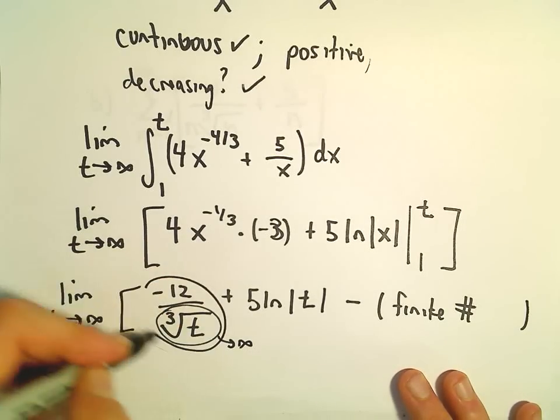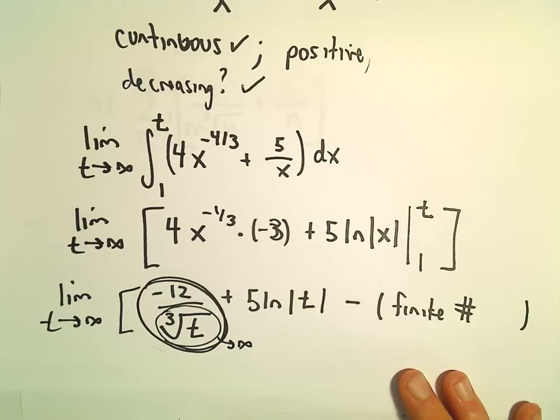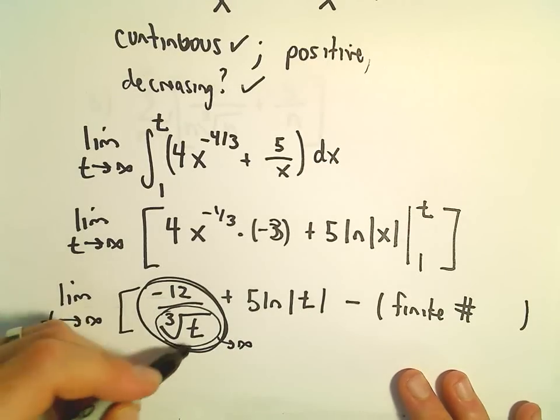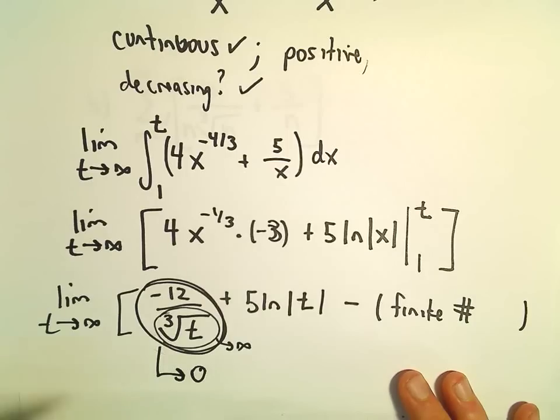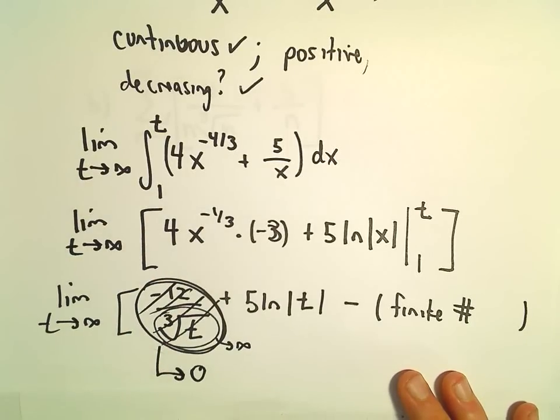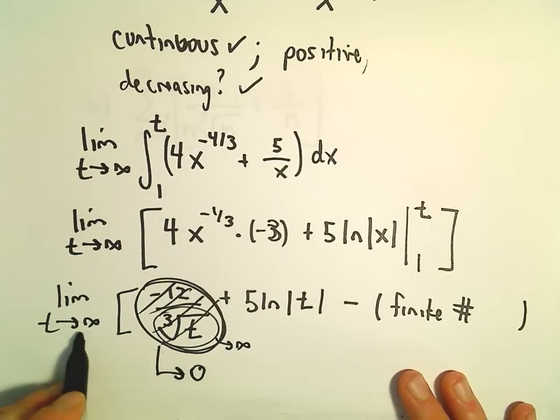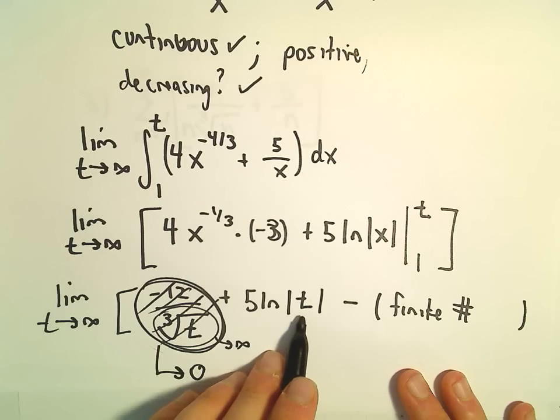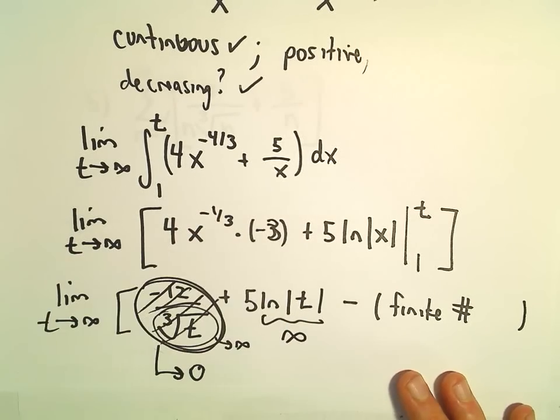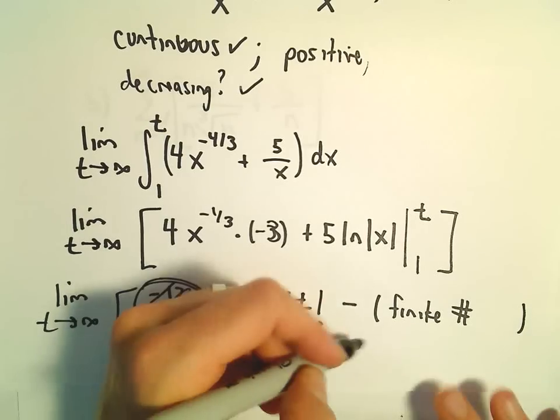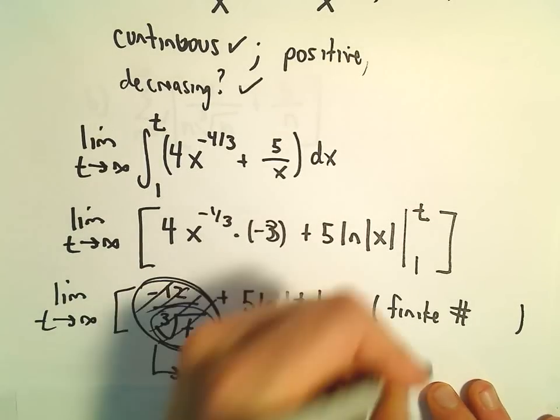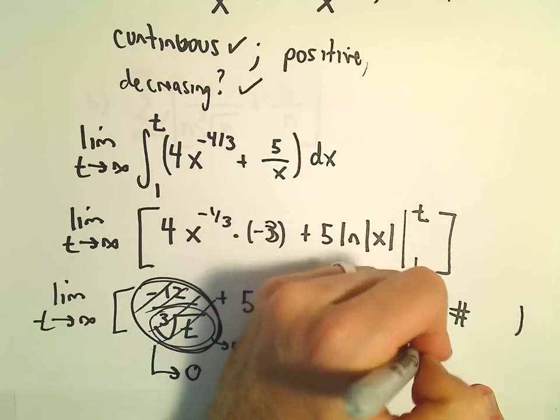But that would make the entire fraction, we've got negative 12 over a big number. That's going to get arbitrarily close to 0. Okay, so the first term's going to go to 0. But as t goes to infinity, the natural logarithm of t, this does go off to infinity. So really, we've got 0 plus infinity minus some finite number. Well, that's going to equal infinity. It's going to be divergent.